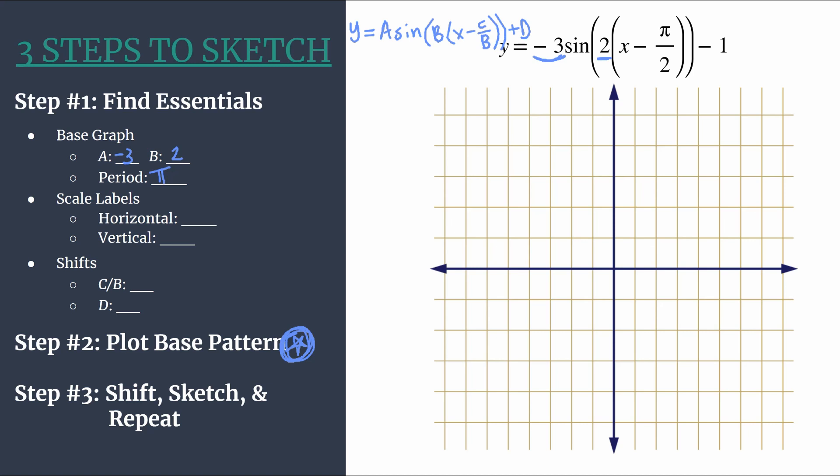All right, so now we're going to choose how we label our tick marks. And we're very particular about this for our horizontal axis. We like to take the period and divide by four. So π divided by four is how we'll label or how we'll count for our horizontal tick marks. And we do this so that when we plot our base pattern in the next step, each key point will align nicely with our horizontal tick marks. Of course, we're going to shift, but it's nice to have that base pattern aligning with our horizontal tick marks.